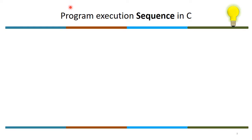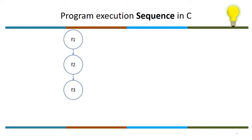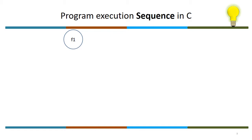Program execution sequence in C: a program in C is nothing but a set of functions executed sequentially. Here, function f1 invokes f2, f2 invokes f3, and f3 invokes f4. Once f4 finishes, execution control comes back to f3, then back to f2, and finally to f1. This is one example.